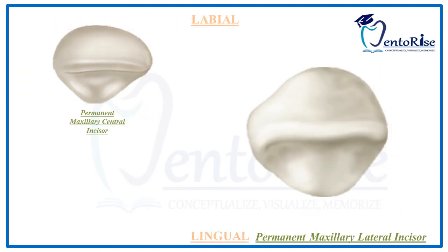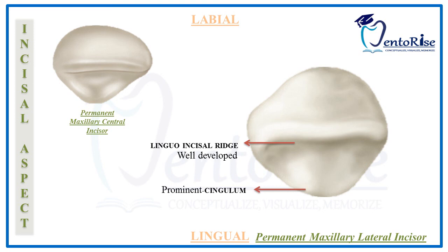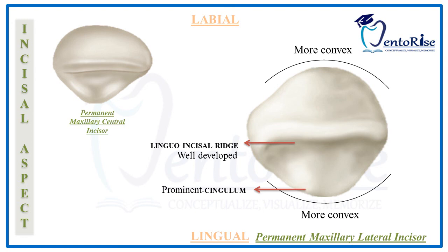The incisal aspect of a permanent maxillary lateral incisor sometimes resembles that of a central incisor or it may resemble that of a small canine. If it resembles the central incisor, the features are more or less the same with a few differences: the tooth is smaller in size, the lingual incisal ridge is more developed, the cingulum is more prominent, and the labial and lingual outlines are more convex. Similar to the central incisor, the labiolingual dimension of the lateral incisor is greater than the mesiodistal dimension.